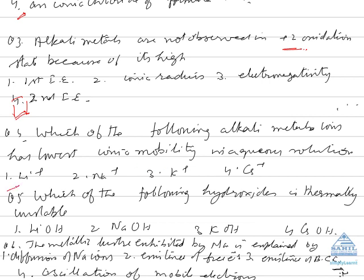The correct answer is Li⁺, confirmed by its lowest ionic mobility. Question 5: Which of the following hydroxides is thermally unstable? Alkali hydroxides are generally very stable and do not decompose even at very high temperatures. However, lithium, due to its small size and high polarizing power, pulls oxygen towards itself, making the O–H bond polar, so it readily splits to give lithium oxide and water. The answer is lithium hydroxide.